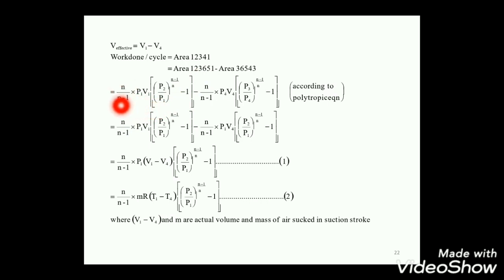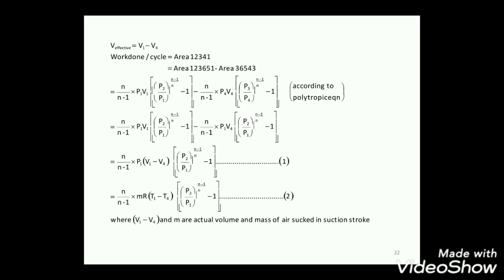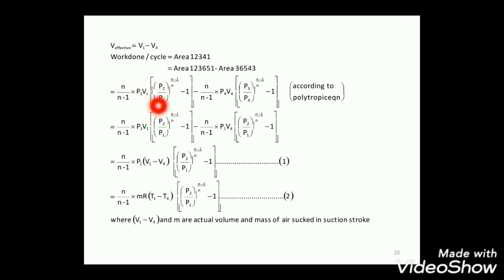In our polytropic equation: n by n minus 1 into p1v1, the whole into p2 by p1 the whole raised to n minus 1 by n, the whole minus 1 — minus the area. The area is n by n minus 1 into p4v4. So work done is equal to area 1-2-3-4-1. Work done in the normal area is calculated using the polytropic process equation: n by n minus 1 into p1v1 into p2 by p1 the whole raised to n minus 1 by n minus 1.